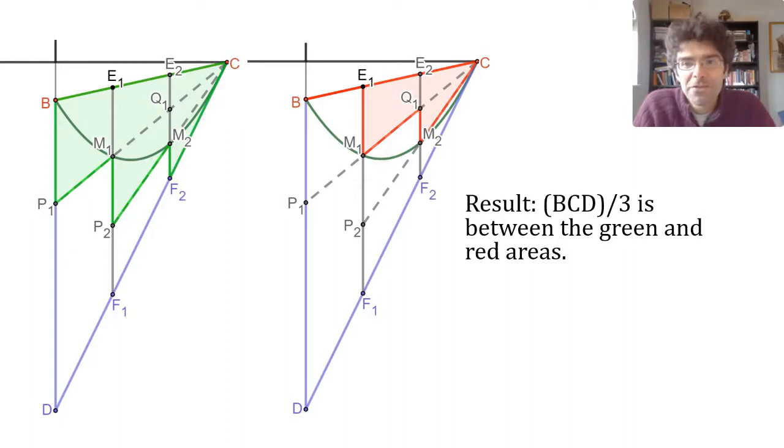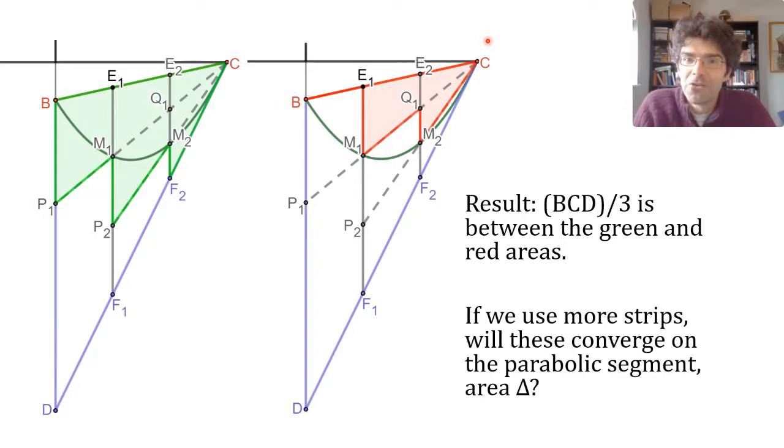And this is true of any set of strips that you can invent, though obviously they would create different zigzags. And you'd imagine that as you split BCD into more and more strips, both the green line and the red line are going to get as close as you like to the parabolic segment. And remember, they're sandwiching BCD over 3. So that value itself must be very, very close to the area of the parabolic segment.